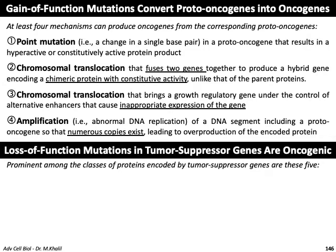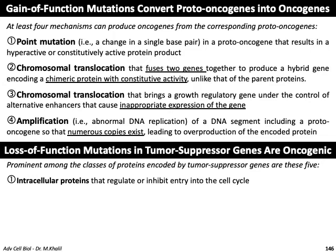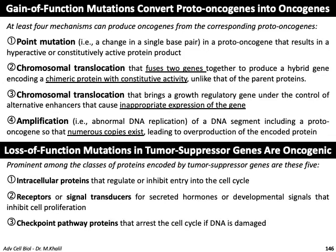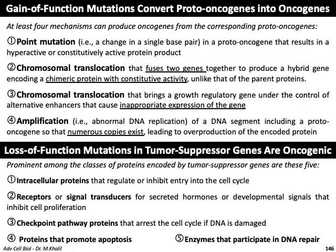For loss-of-function mutations, five prominent classes of proteins are affected: intracellular proteins that regulate or inhibit entry to the cell cycle; receptors or signal transducers for secreted hormones or developmental signals that inhibit cell proliferation; checkpoint pathway proteins that arrest the cell cycle if DNA damage occurs; proteins that promote apoptosis (loss of function means no apoptosis); and enzymes that participate in DNA repair (loss of function means no DNA repair).